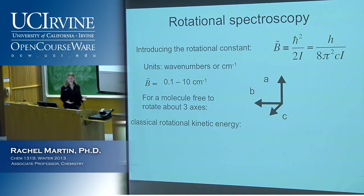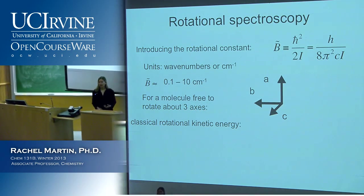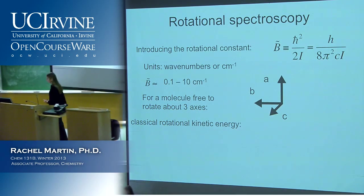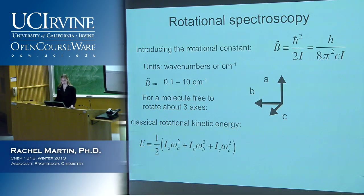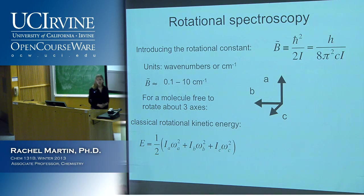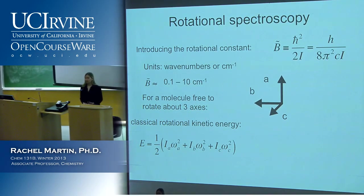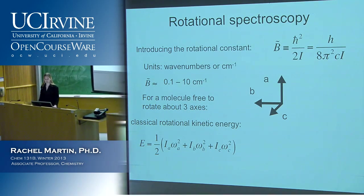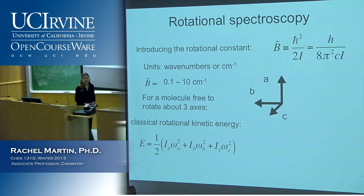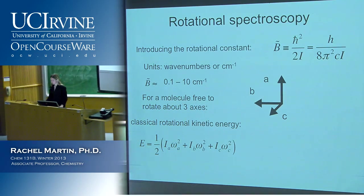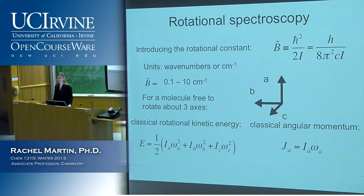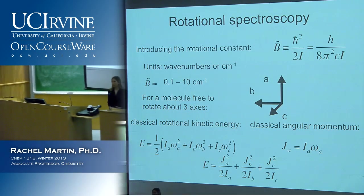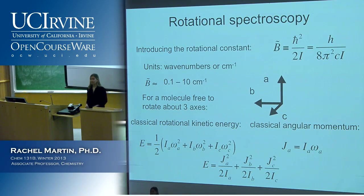If we're talking about a molecule free to rotate about three different axes, we need to consider different moments of inertia. Looking at our classical rotational kinetic energy, we have three moments of inertia labeled A, B, and C — this is the general case of a molecule with no symmetry and three separate moments of inertia. Its classical angular momentum around each axis relates to its frequency, and here is its overall energy. We'll look at the quantum analog for different shaped molecules.